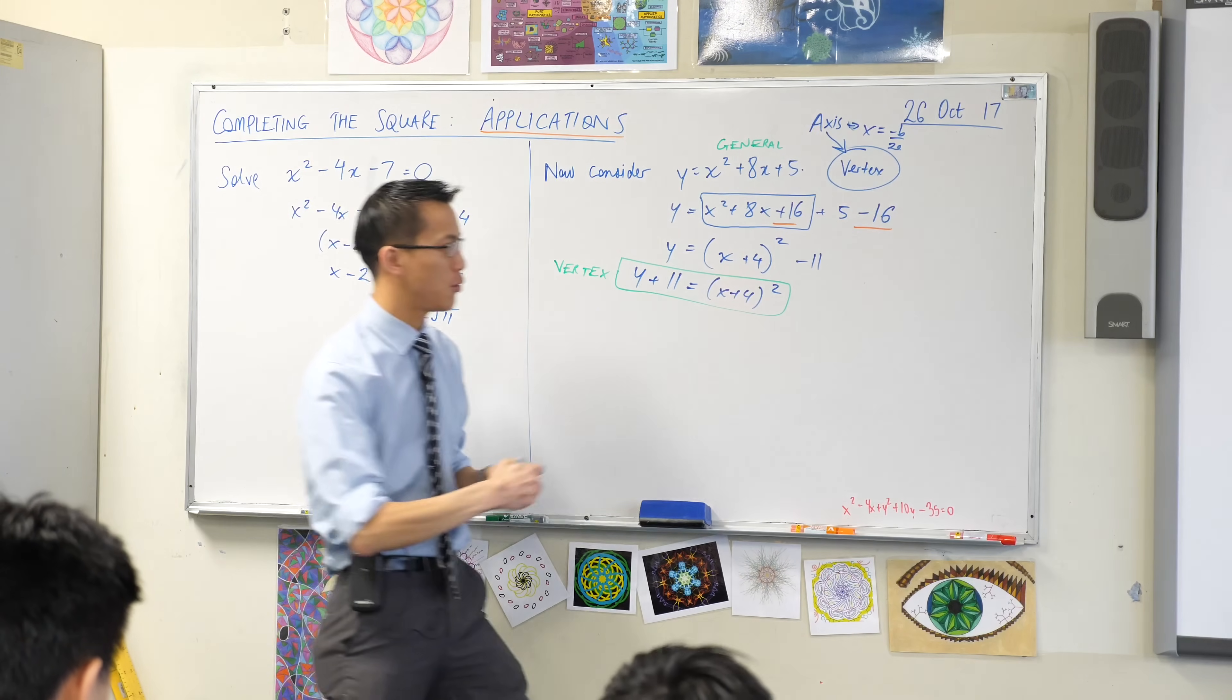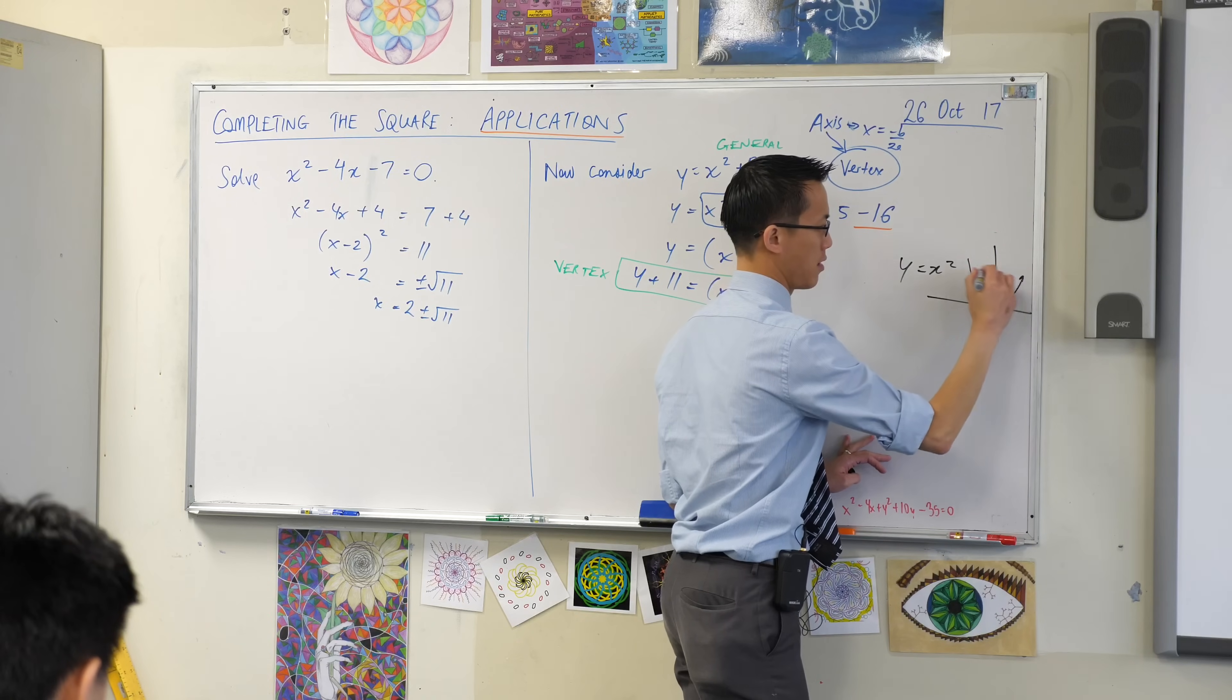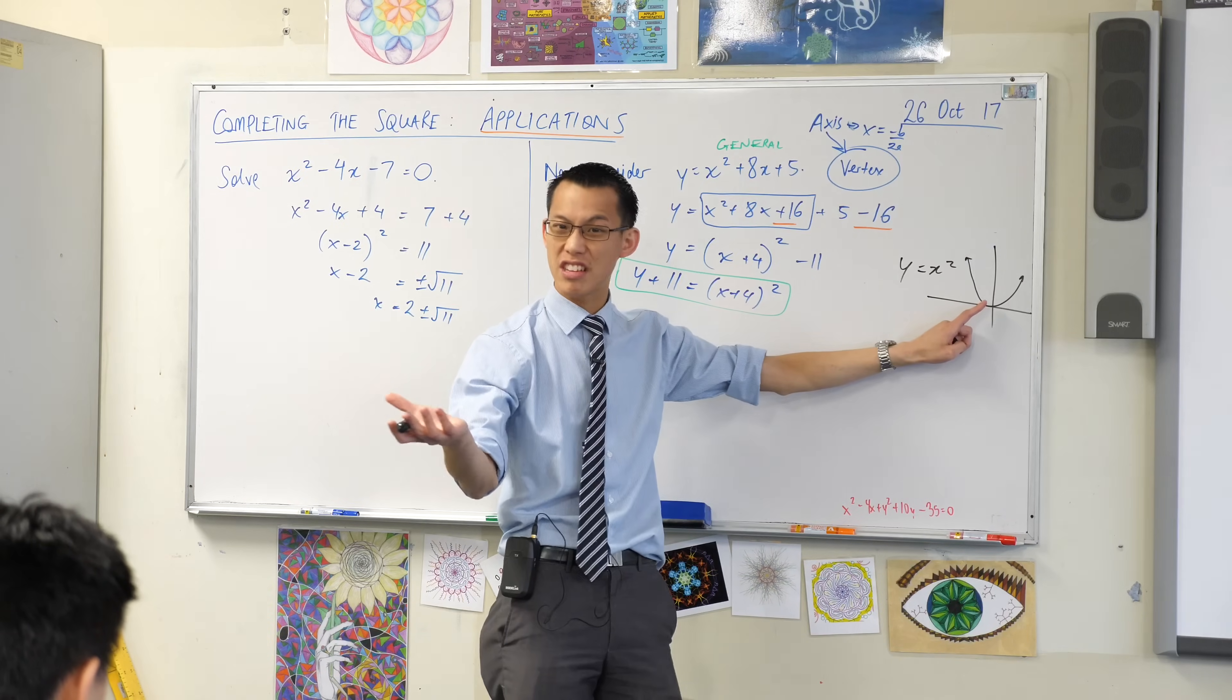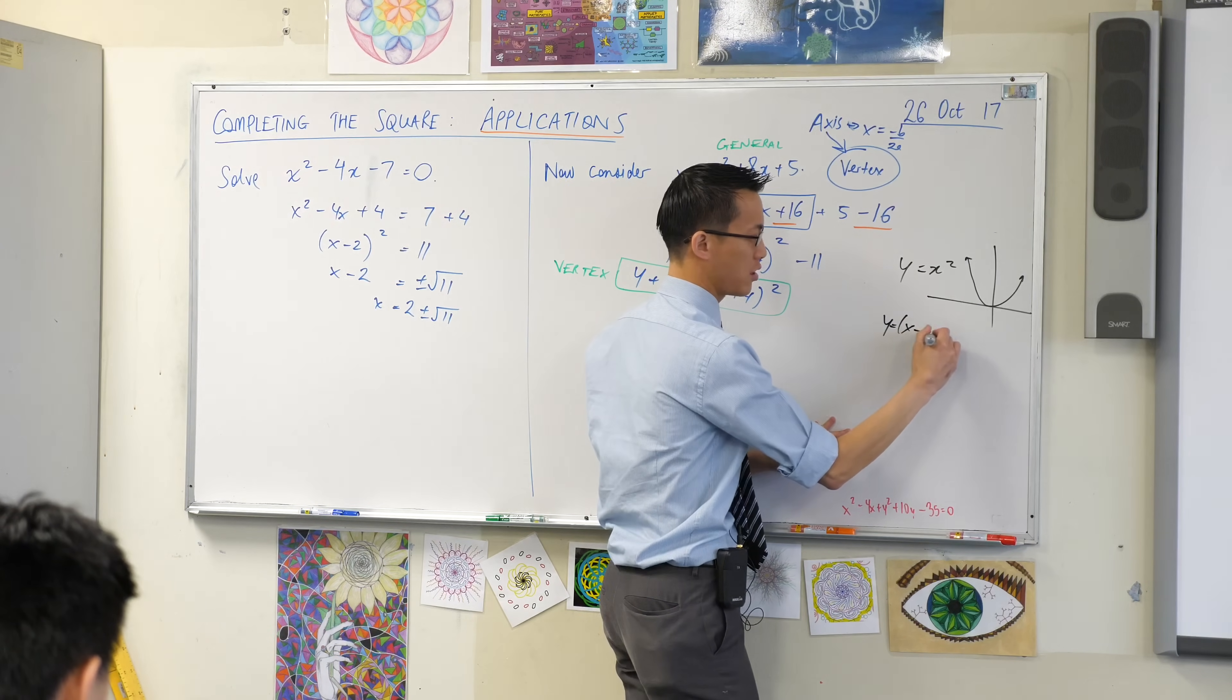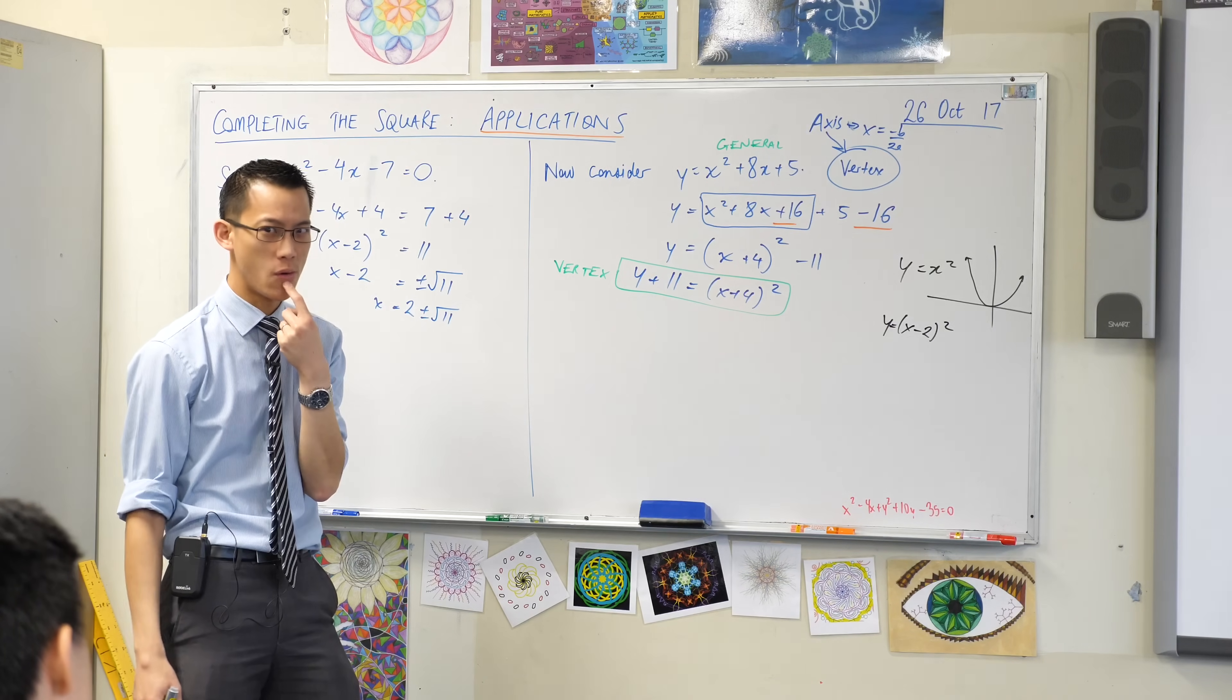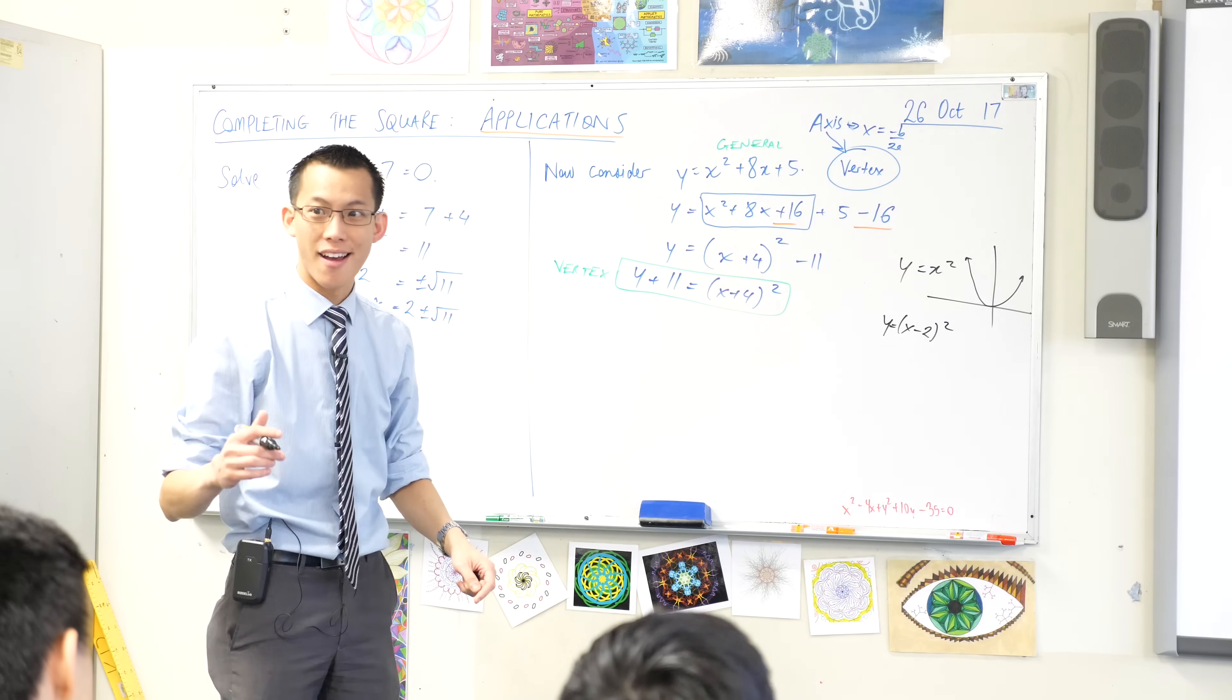If you recall what y equals x squared looks like. We're very familiar with this shape. It just looks like that. So this is, bless you, a regular parabola. It's centered, or its vertex rather, is at the origin. No big deal. Whoops. I want you to tell me what that would look like in comparison. I need you to think back on this one. What would it look like? It's moved somewhere. It's just like that, but it's moved somewhere. Okay, where's it going? Does it move two units down?